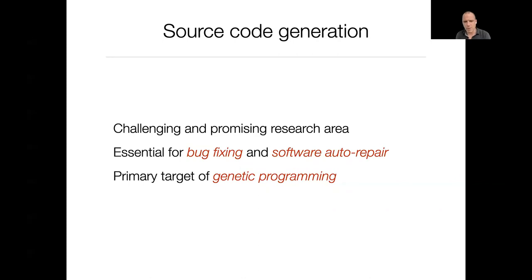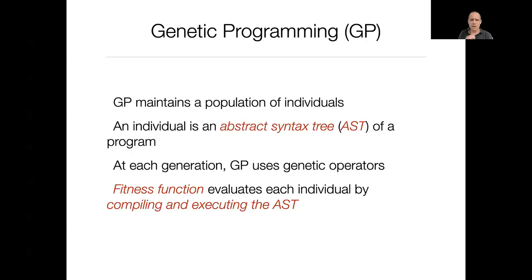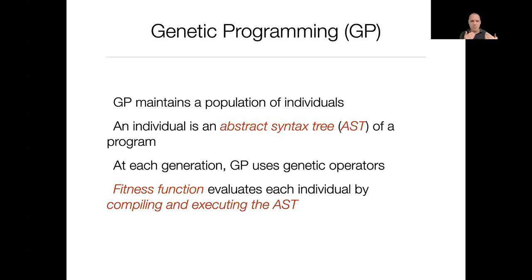In this paper, we use genetic programming to generate source code. Genetic programming maintains a population of individuals, and each individual is a program. This program is expressed using a tree called the abstract syntax tree. At each generation, genetic programming evolves individuals in order to create better, more fit individuals, using genetic operators such as mutation and crossover. This evolution is driven by a function called the fitness function, which evaluates each individual by compiling and executing the program.